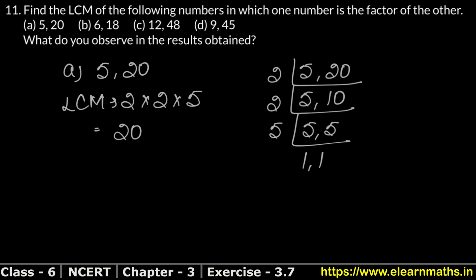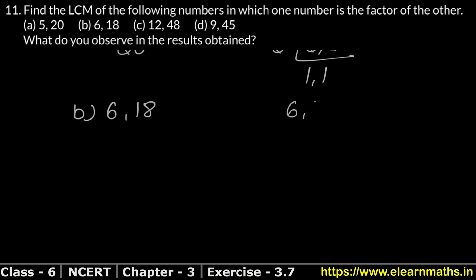Similarly b part we'll do. 6 and 18, both numbers' LCM we'll find together. See, 2 divides both numbers, so 2 threes are 6 and 2 nines are 18. Both numbers divide by 3, so 3 ones are 3, 3 threes are 9. See, 3 ones are 3, 3 threes are 9. Similarly 3 divides and 1 as it is. So 3 ones are 3. So what is the LCM of both numbers? LCM is 2 into 3 into 3. So what did this become? See, 2 threes are 6, 6 threes are 18. Right?